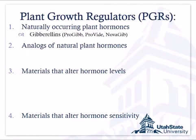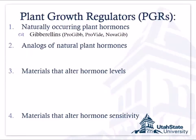The first example is gibberellins — naturally occurring hormones we can formulate, mix in a spray tank, and put on leaves to cause a response. Commercial formulations include Pro-Jib and Nova-Jib, which are both GA3. Provide is GA4 and GA7 together — two different gibberellins than Pro-Jib.